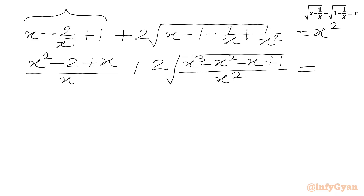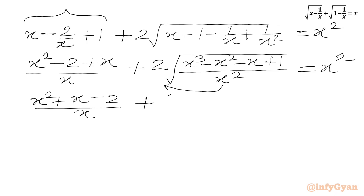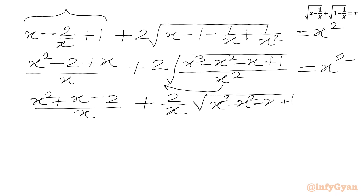On the RHS we will write x². Now x² will come out from this square root as x. So we will write (x² + x − 2) over x, then we will be writing (2/x) times square root of (x³ − x² − x + 1) equal to x².